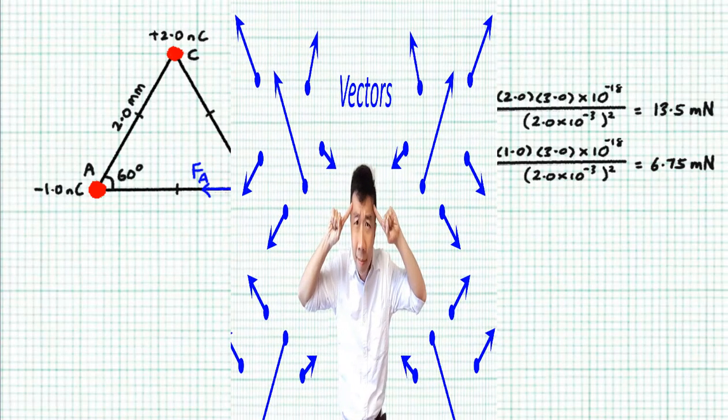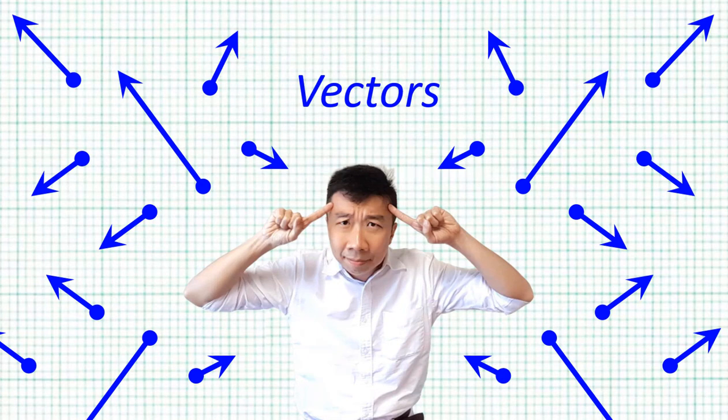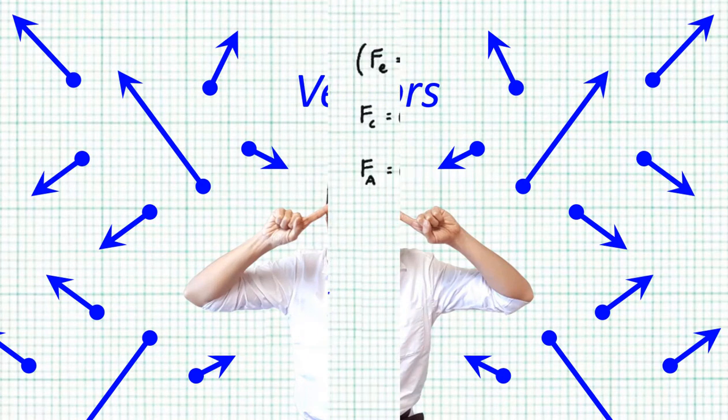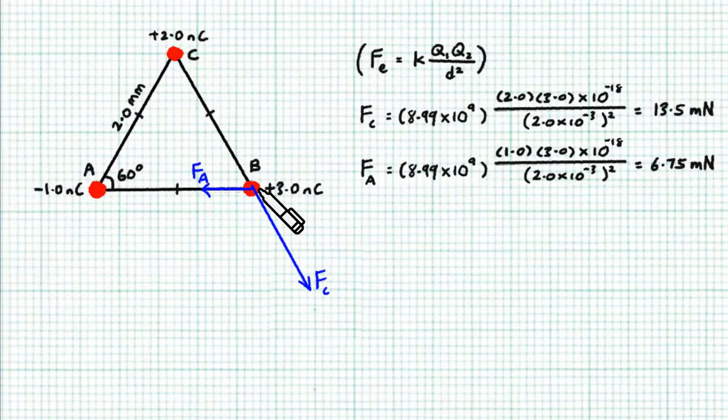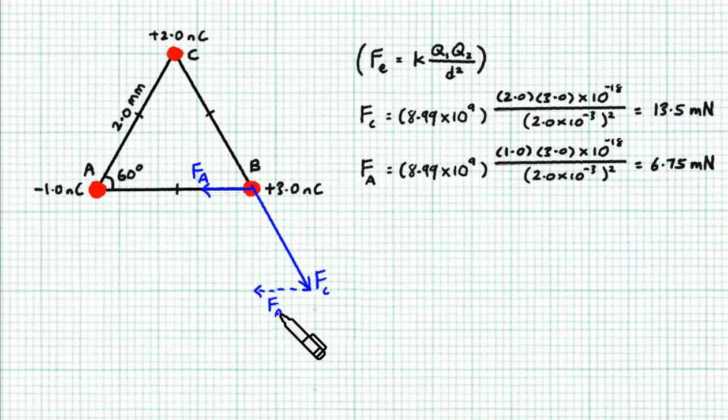We have to do a vector summation, because electric forces are vectors. So we have to do Fc plus Fa, giving us the resultant force, Fr.